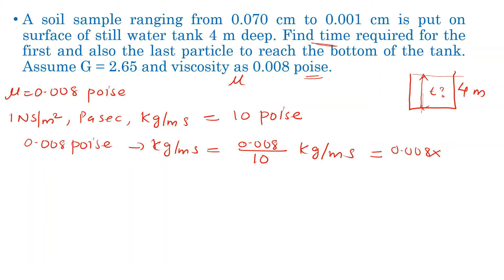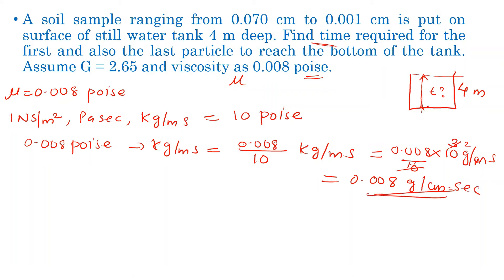So 0.008 poise is equal to 0.008 by 10 raised to 3 grams per m·s. After canceling 10², we get 0.008 g per cm·s, which confirms the poise unit. So 0.008 poise is our dynamic viscosity value.